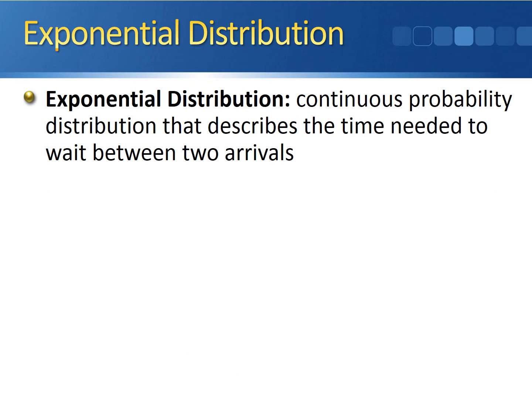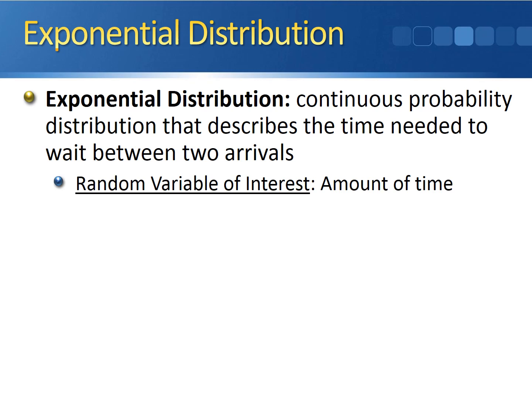To formally define it, the exponential distribution is a continuous probability distribution that describes the amount of time needed to wait between two arrivals. In an exponential distribution, the random variable of interest is always the amount of time — how much time elapses between two arrivals.